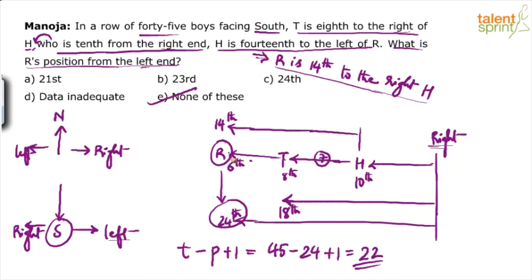When you know how to plot the persons in the row and quickly find out the position, it's all about finding R's position from the right end first. The question asked for the position from the left end. Using position from the right end with the formula, the answer is 22. So option E — none of these — is the answer, and the correct value is 22.